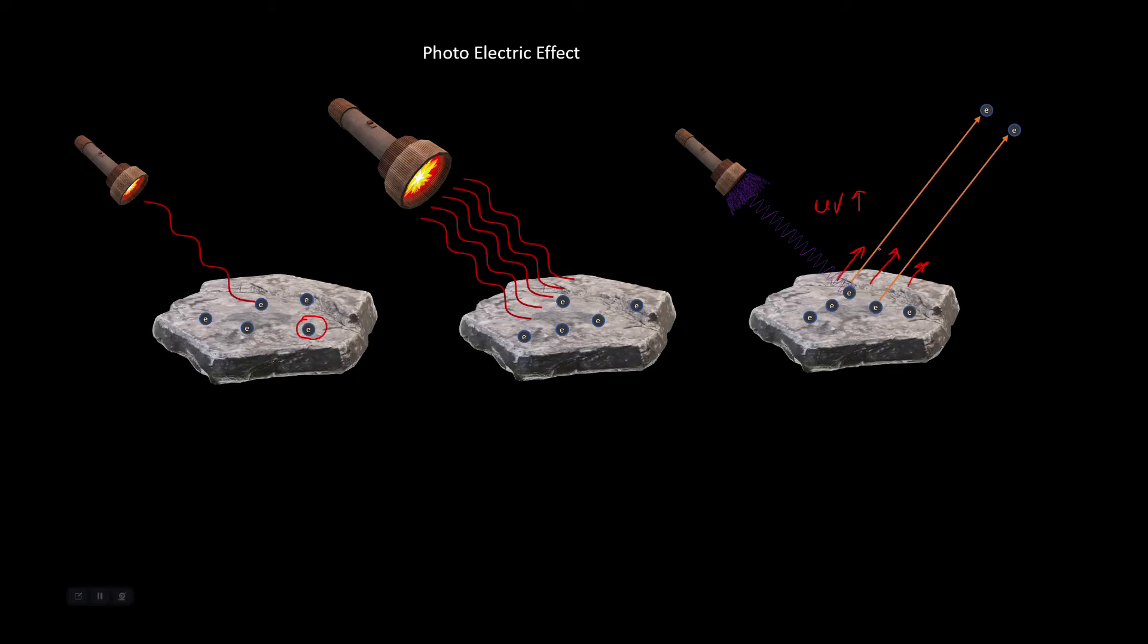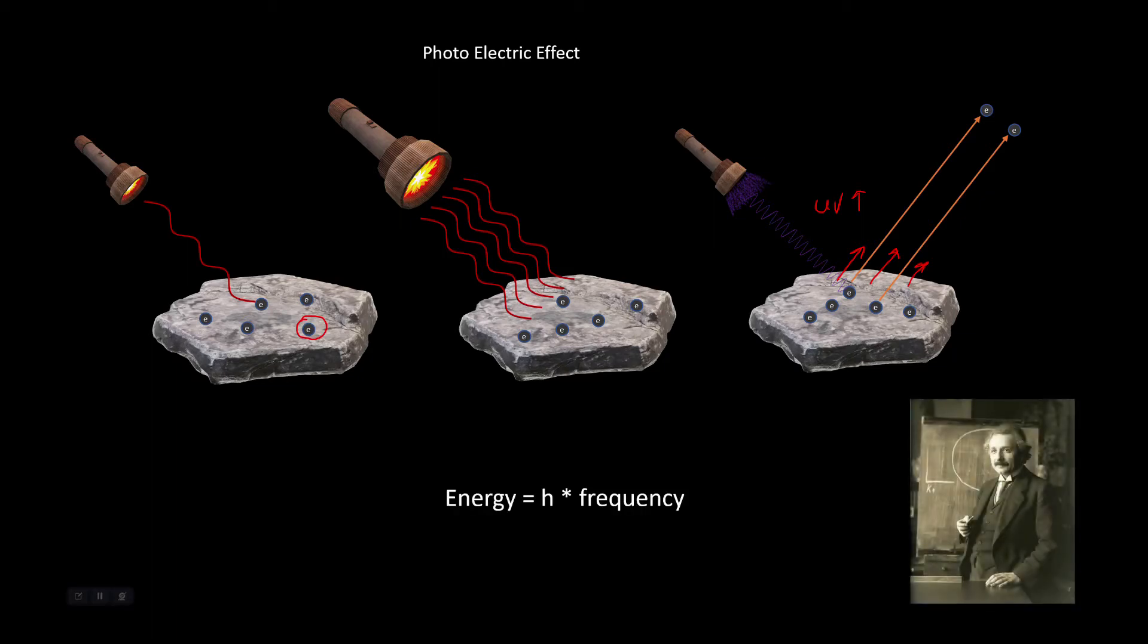This unexpected observation was something the wave theory could not explain. In 1905, Einstein formulated this photoelectric phenomenon as light having packets, which later were called photons, and each photon had a fixed amount of energy. The energy was given by this formula here: E = h times frequency, where h is Planck's constant. The energy from the photon gets transferred to the electron through conservation of energy, and if the energy is sufficient enough, the electrons will escape and eject.